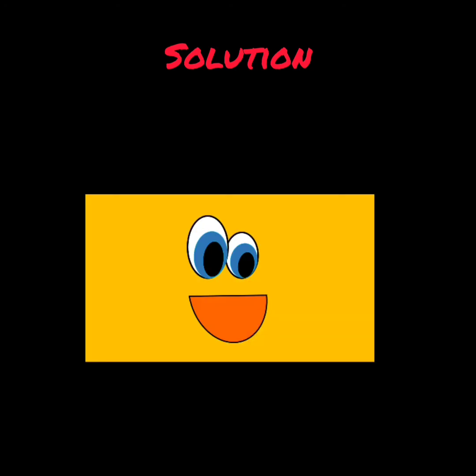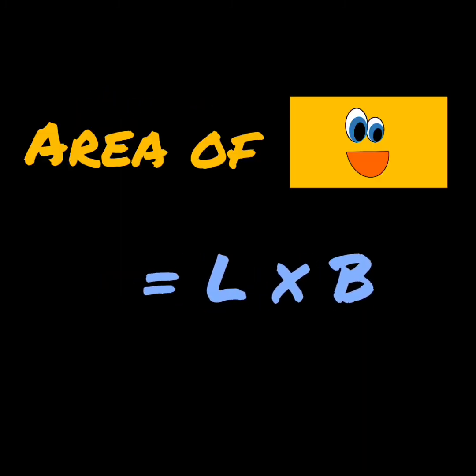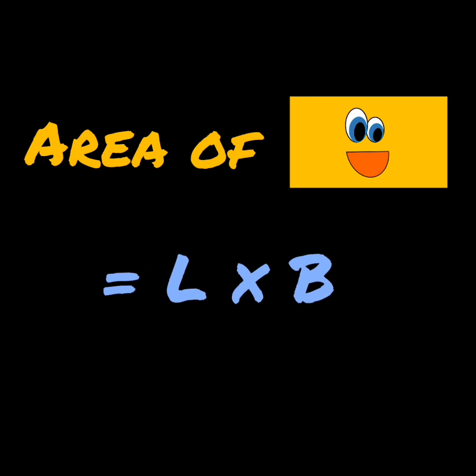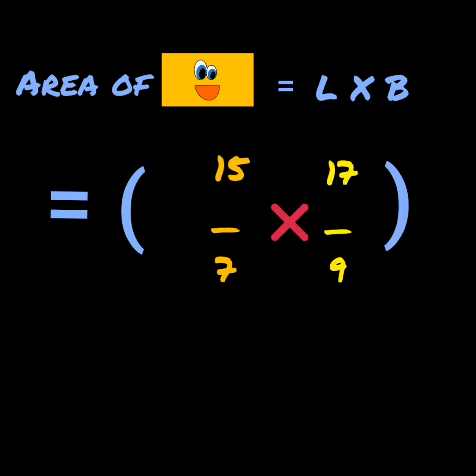The length of the rectangle is 15 by 7 cm and the breadth is 17 by 9 cm. We have to find out the area of the rectangle. Area of rectangle is length into breadth. So, multiply both fractions: 15 upon 7 into 17 upon 9. In multiplication, we multiply numerator with numerator and denominator with denominator.